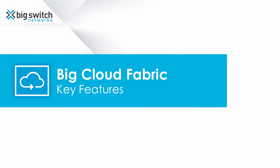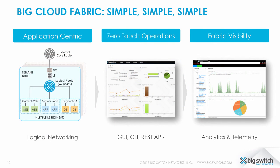Let's look more closely at some of BCF's key features. Everything is aimed at simplicity. Configuration and management of the fabric is tenant and application-centric. The single pane of glass control is via a GUI, a CLI, or the RESTful API. The extensive fabric analytics features leverage SDN's deep visibility into the fabric to ensure that you always know what's going on in your network.